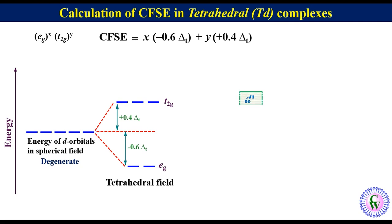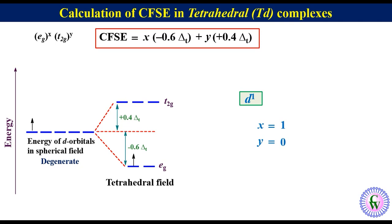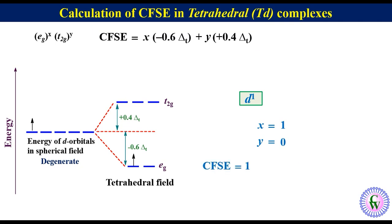If there is one electron in the metal ion in a spherical field environment, the electron will be here. In tetrahedral field, this electron will be in the eg orbital. So x is equal to 1 and there is no electron in t2g orbital, so y is equal to 0. CFSE is equal to 1 into minus 0.6 delta-t plus 0 into plus 0.4 delta-t, so CFSE will be equal to minus 0.6 delta-t.